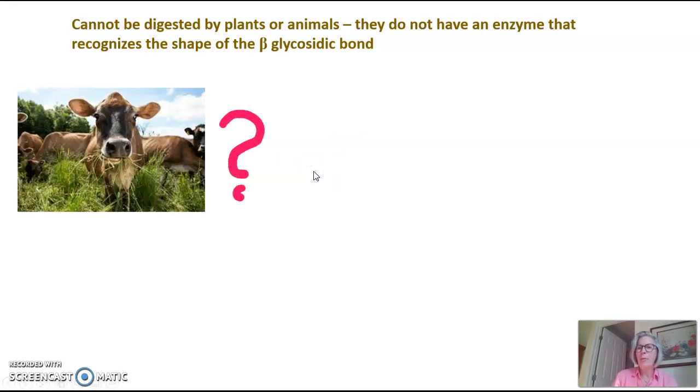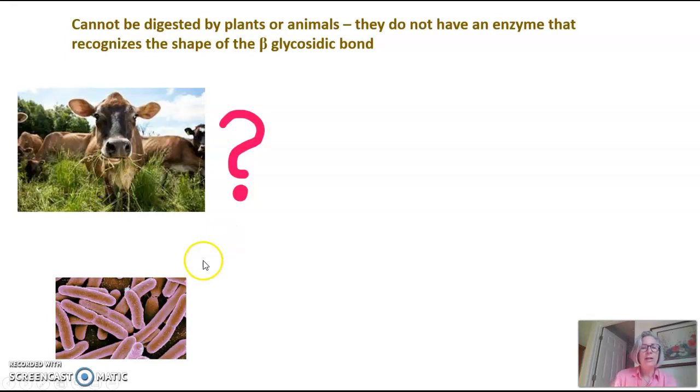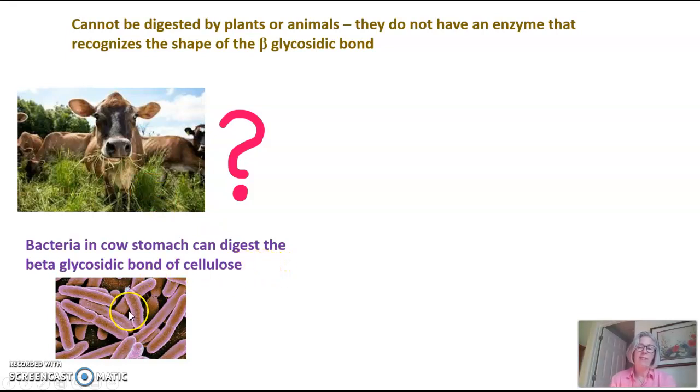But you might be saying, wait a minute, what about cows? Cows eat grass and grass is a plant, so it has cellulose. Well, it turns out that no, cows cannot break down cellulose, but they have bacteria in their stomach that do have an enzyme that recognizes the shape of that beta glycosidic bond. So the cow eats the grass and then the bacteria in the stomach break down the cellulose into the glucose units so that the cow gets the energy source. So the cow and the bacteria have what we call a mutualistic relationship where they each benefit from this arrangement.